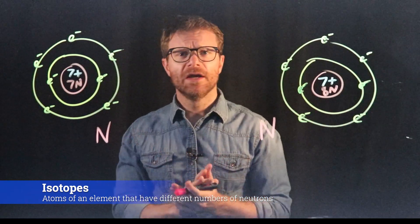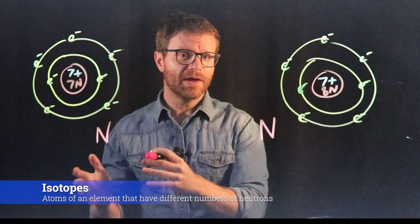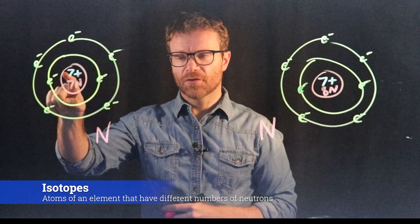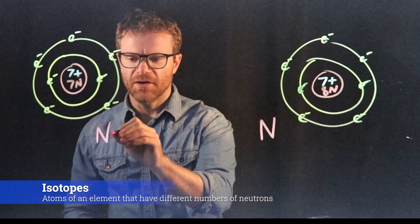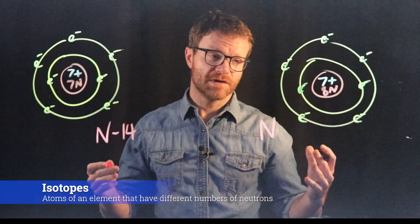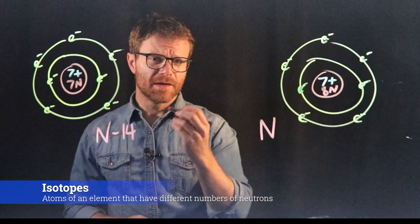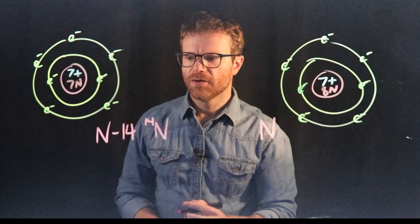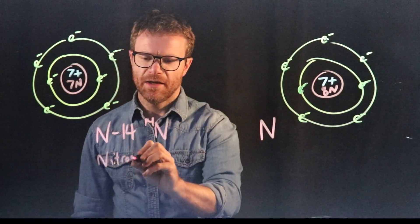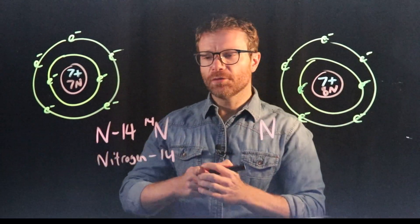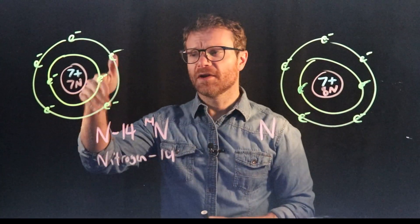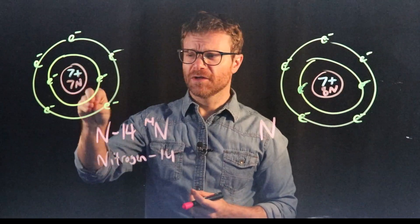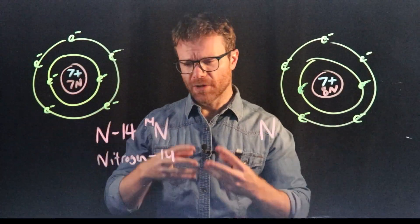And the way we distinguish them usually is you can just write a dash and then write the atomic mass of that element. So this particular nitrogen over here has seven protons plus seven neutrons for a total mass of 14. So we'd call this N14. You can also write it this way. This is a common way to write it. You would just put the little 14 up in the corner like that. N14. You could also write it out as nitrogen 14. All three of these things are saying the same thing. It's nitrogen with an atomic mass of 14. You might ask what about all these electrons? Well remember electrons are incredibly small compared to protons and neutrons, so we can more or less just ignore them when calculating the mass.